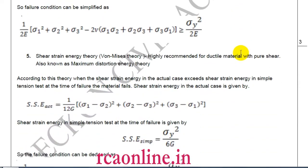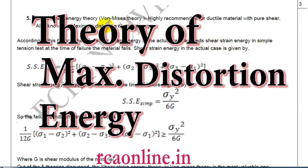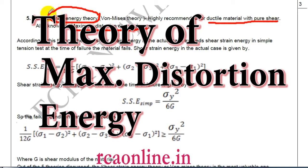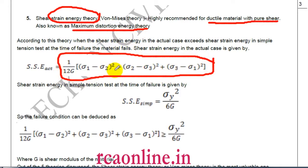The fifth and most important modern theory is the Von Mises theory, also called the Maximum Distortion Energy theory or Shear Strain Energy theory. It is highly recommended for ductile material with pure shear. The distortion energy for complex loading is: (1/12G) × [(sigma one − sigma two)² + (sigma two − sigma three)² + (sigma three − sigma one)²], where G is the modulus of shear.